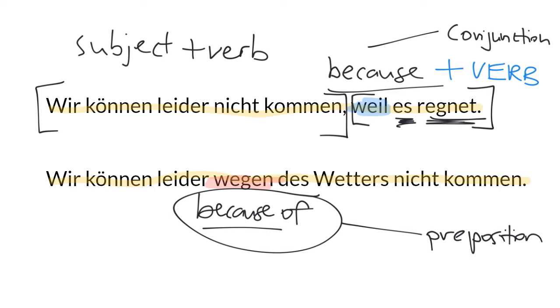But in the second sentence, wegen des Wetters—we'll just bracket that off—is actually a prepositional phrase by itself. It's a preposition and then, in this case, has a noun after it to form what we call a prepositional phrase.